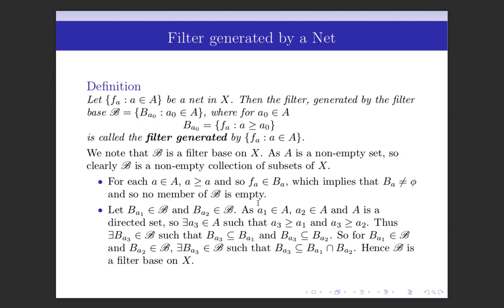Next we check the second condition: let B(a₁) and B(a₂) be in B, with a₁, a₂ ∈ A. Since A is a directed set, there exists a₃ ∈ A such that a₃ ≥ a₁ and a₃ ≥ a₂. Therefore there exists B(a₃) in B such that B(a₃) ⊆ B(a₁) and B(a₃) ⊆ B(a₂), because if a₃ ≥ a₁ then B(a₁) ⊇ B(a₃), and a₃ ≥ a₂ implies B(a₂) ⊇ B(a₃).